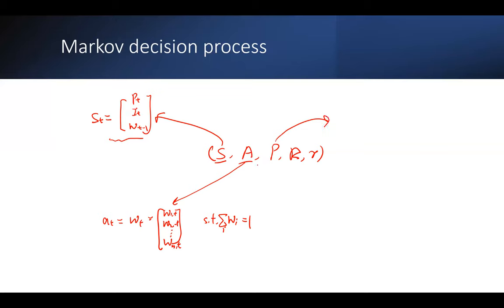The transition probability describes the environment. If we are in state s_t and we take action a_t, we observe the next state s_{t+1}. The probability p describes this transition — it could be 0.5 or 0.8, for example. Depending on the specific algorithm used, we may or may not want to learn this function. It is a probability and should sum to 1 over all possible states we can transition to.